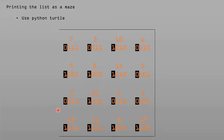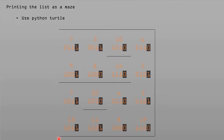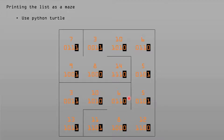Then it goes to the next row and prints the bottom wall of that. Where it's 0, it's pen up — it doesn't print anything. Where it's 1, it prints a wall. It's constantly going pen up, pen down, depending on whether there are 0s or 1s. It does the same thing for the upward walls, looking at the rightmost value in each 4-bit value. And that's a finished maze — where a value was 0, no wall is printed there.